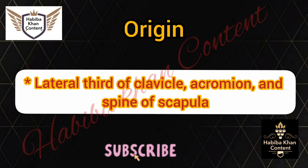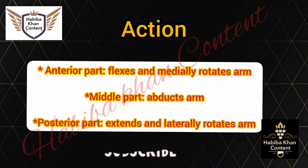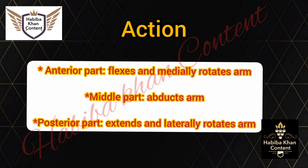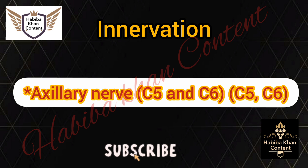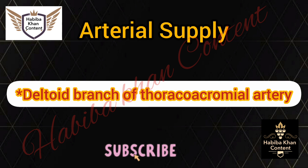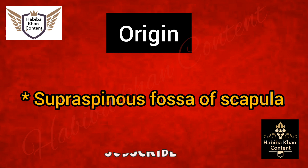Deltoid muscle. Origin: lateral third of clavicle, acromion, and spine of scapula. Insertion: deltoid tuberosity of humerus. Action: anterior part flexes and medially rotates arm; middle part abducts arm; posterior part extends and laterally rotates arm. Innervation: axillary nerve C5 and C6. Arterial supply: deltoid branch of thoracoacromial artery.